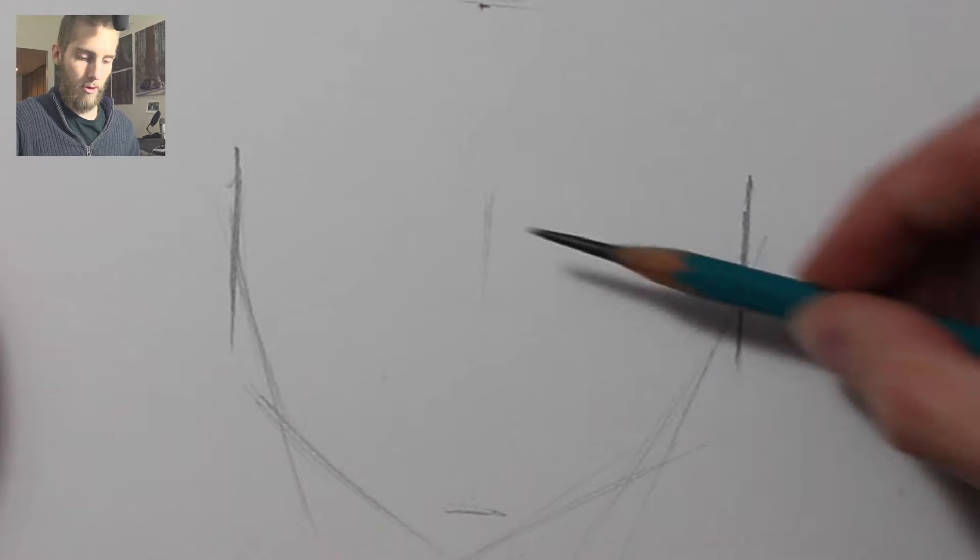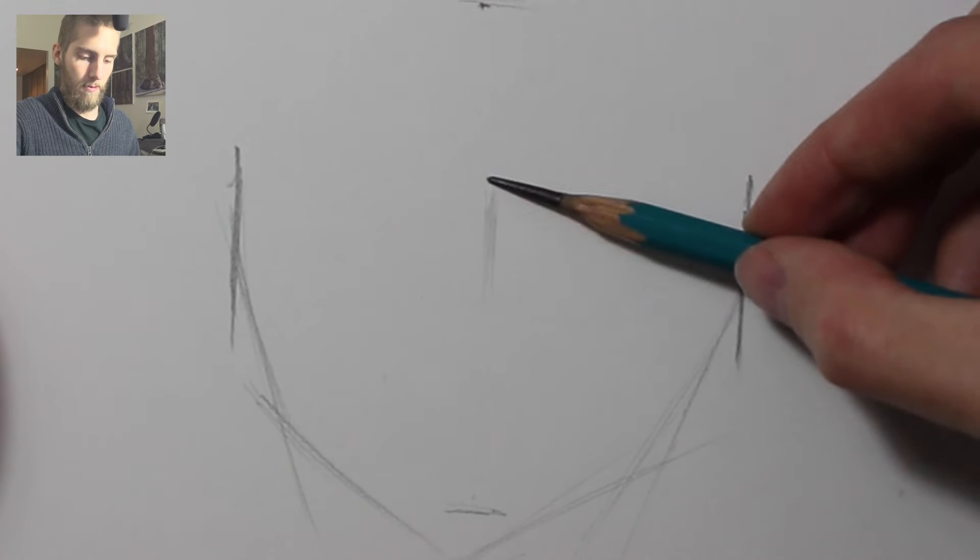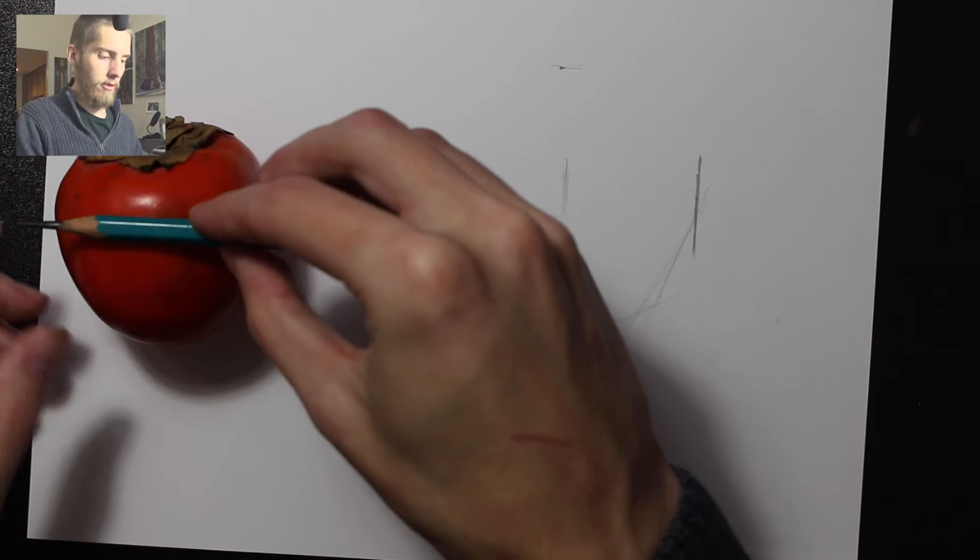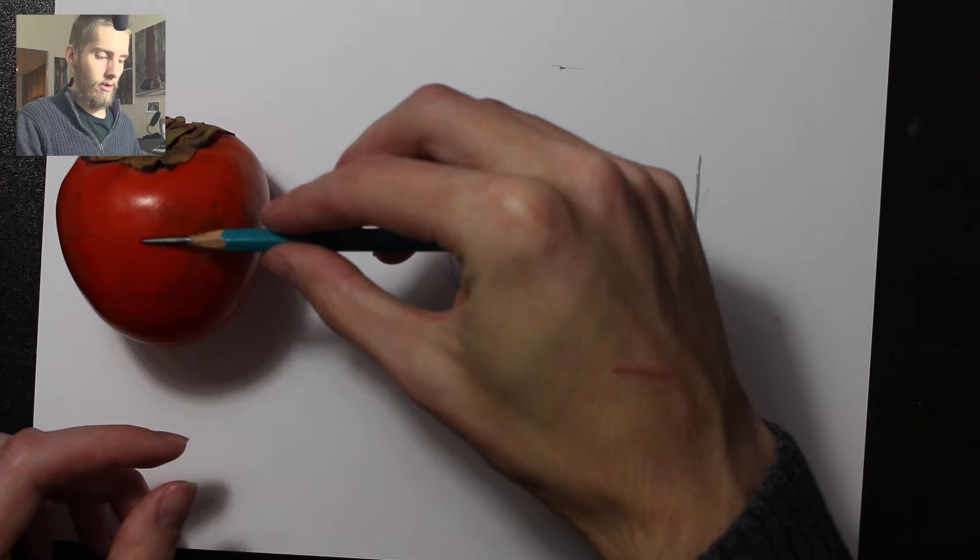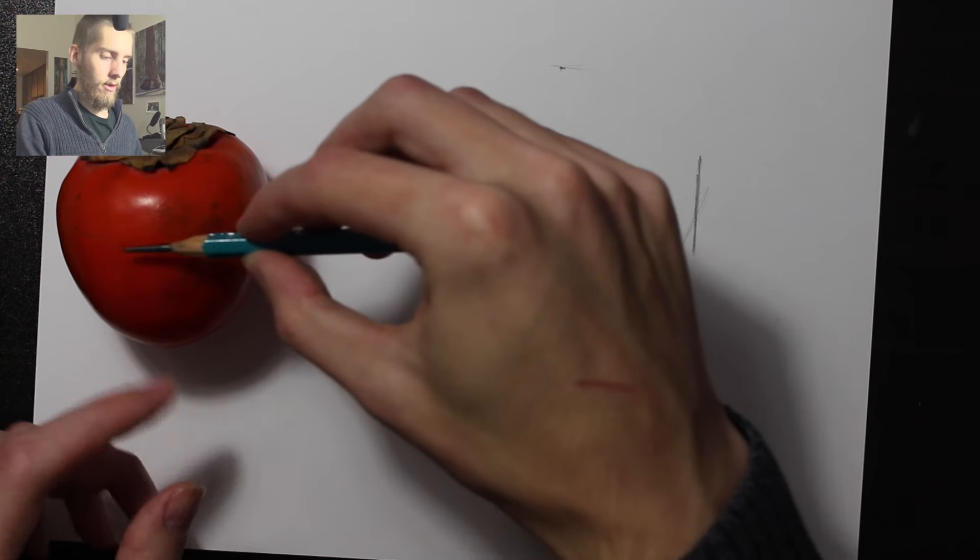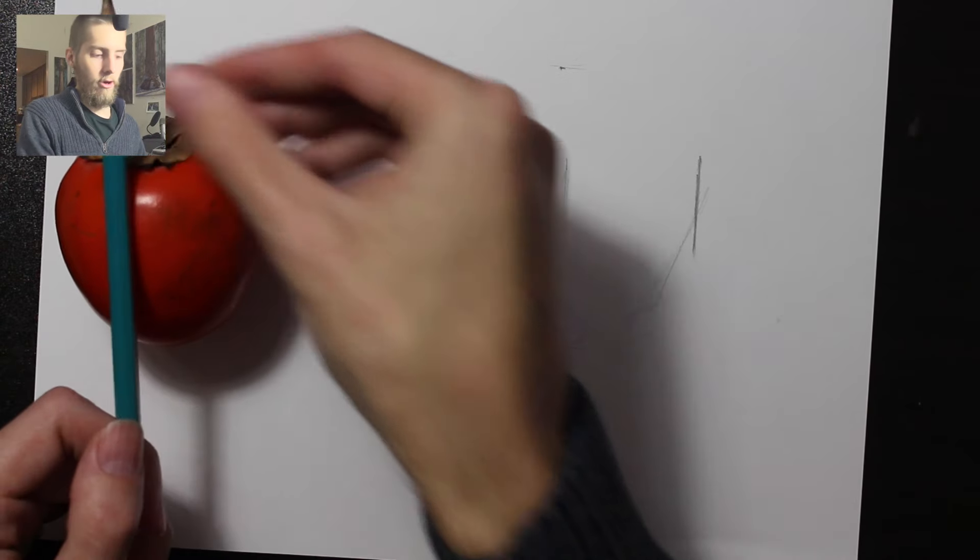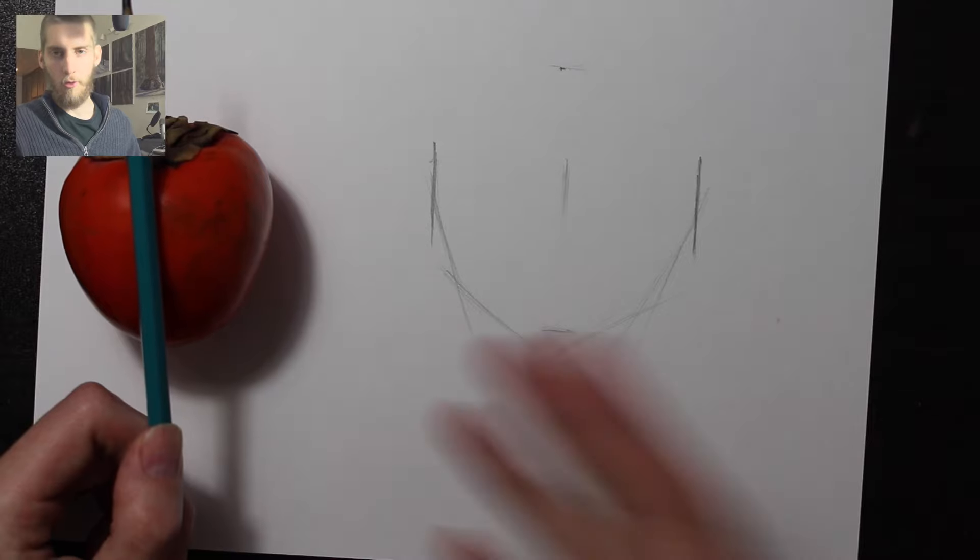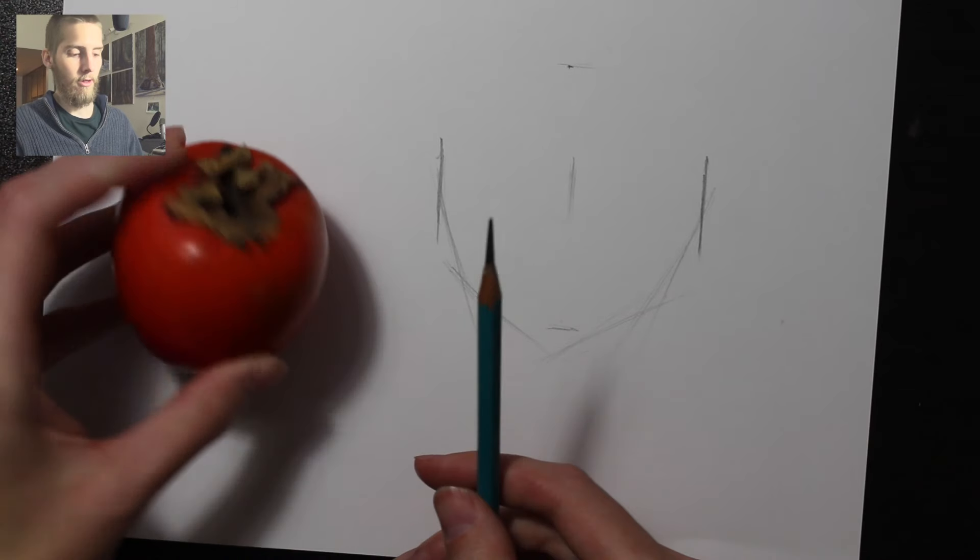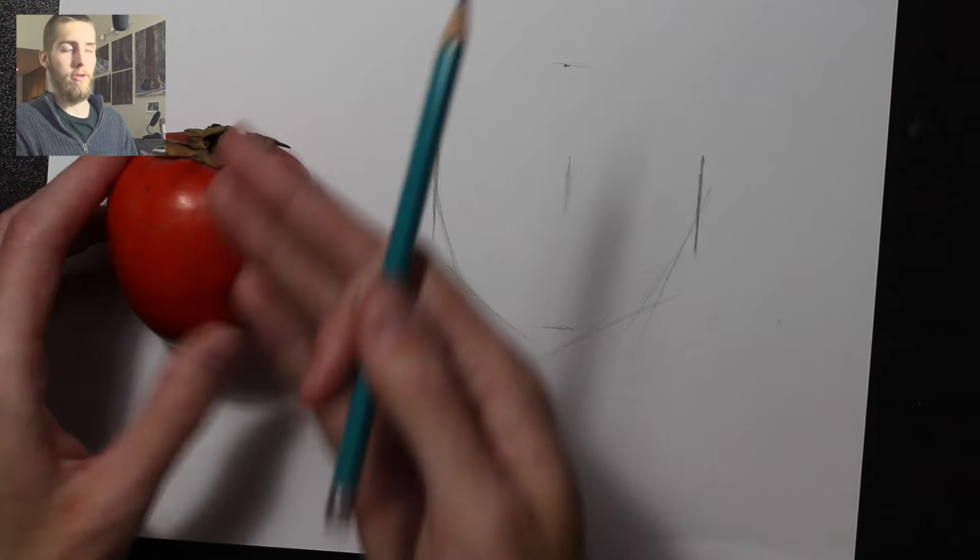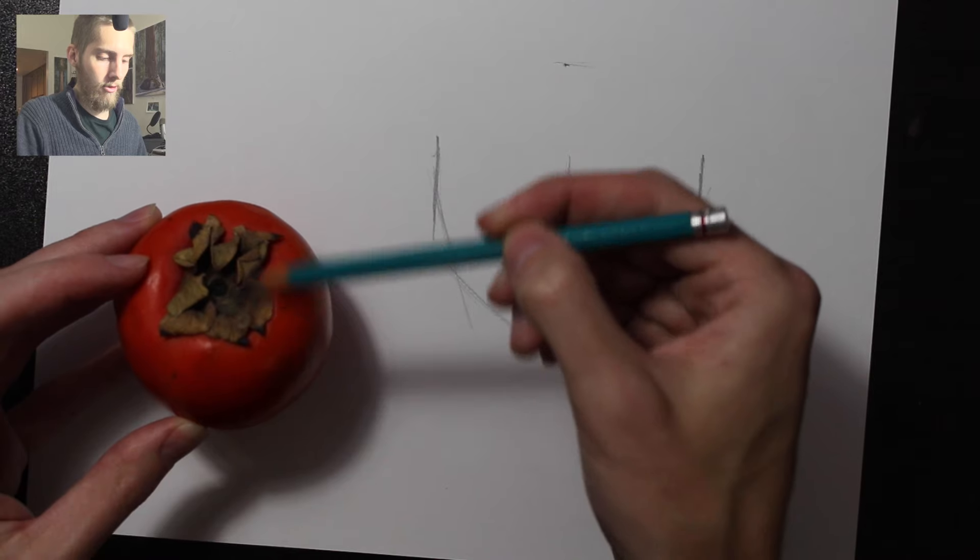That is pretty much the center. Now I can find the center on my object, do the same thing. If I was drawing a portrait or something, this would be much more valuable. But on something like this, it's not going to be as valuable because it's just a fruit.